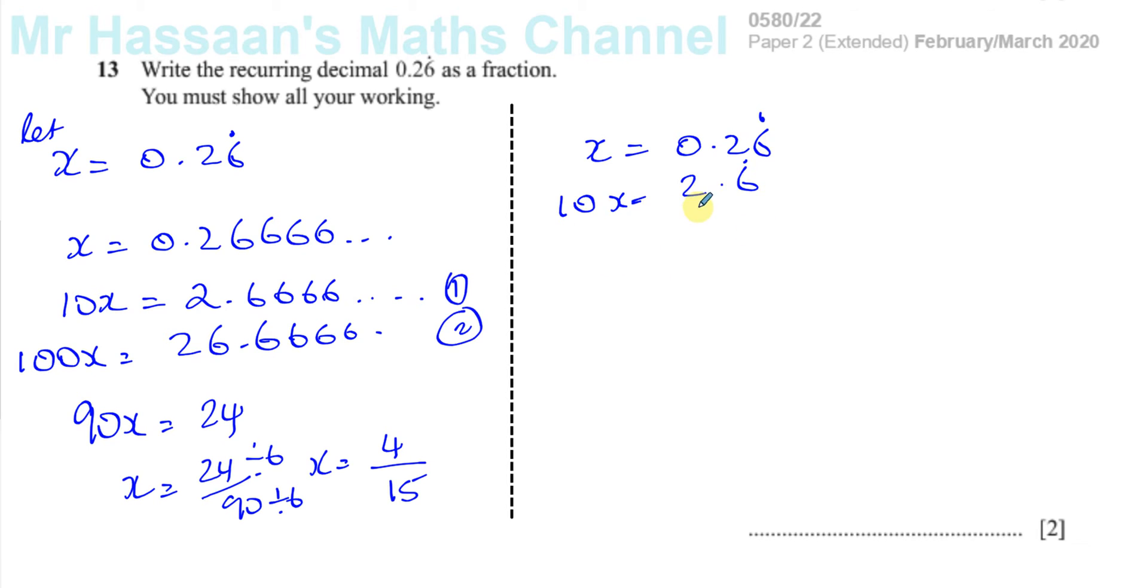So you're going to end up with, let me just write it out like this. 0.2666, and this is 2.666.